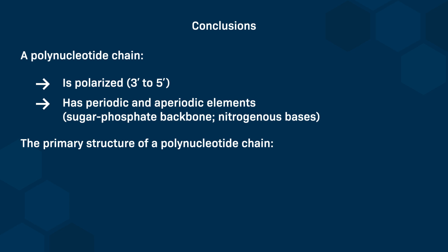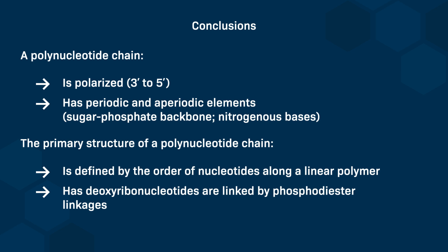The primary structure of a polynucleotide chain, whether it's DNA or RNA, is defined by the order of nucleotides in the linear polymer. The primary structure contains deoxyribonucleotides that are linked by phosphodiester linkages.